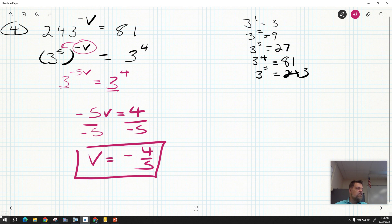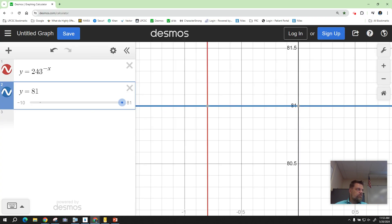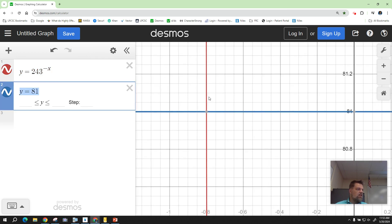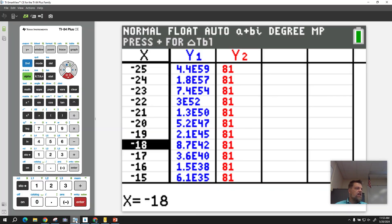Now, if I graph that, which I did in Desmos, I'm graphing the left-hand side of the equal sign and the right-hand side of the equal sign. Notice that they cross at negative 0.8.